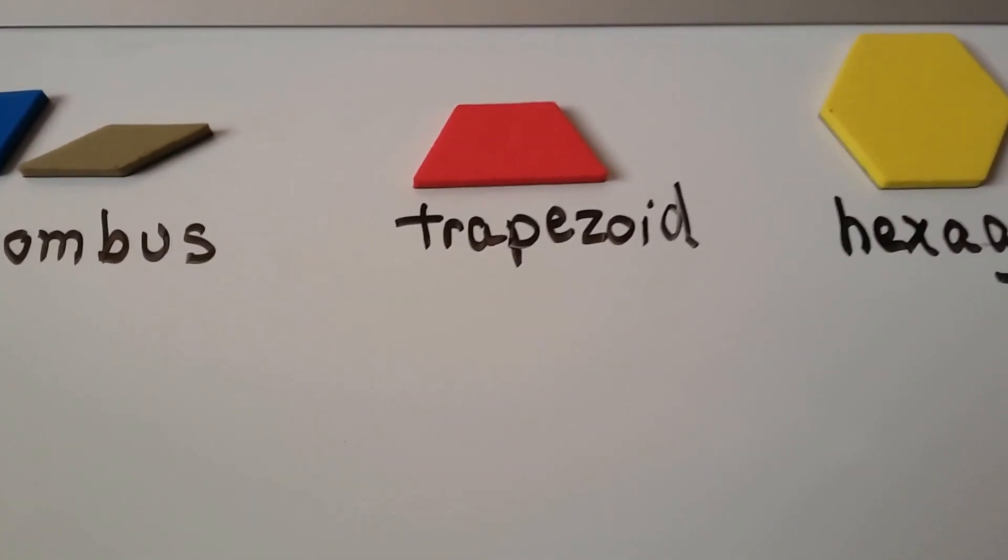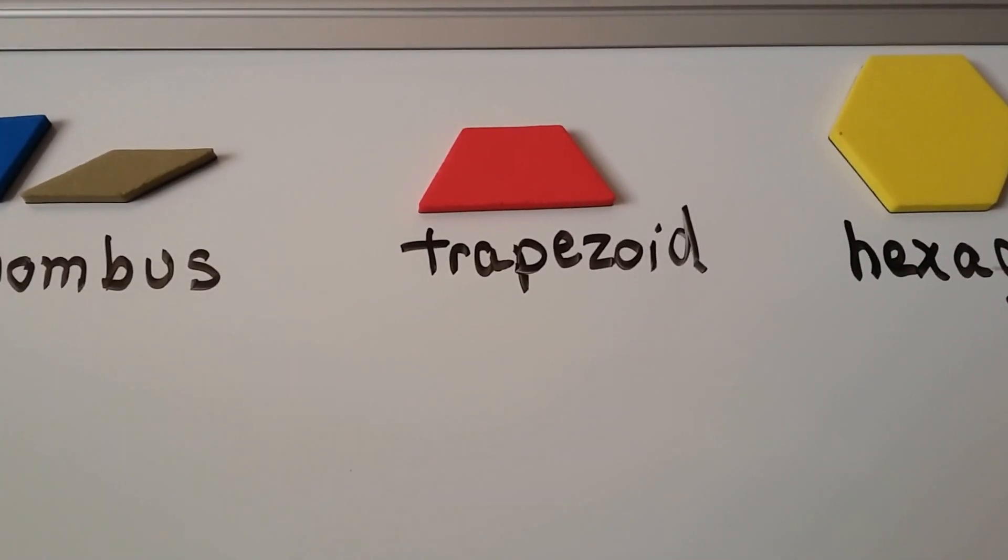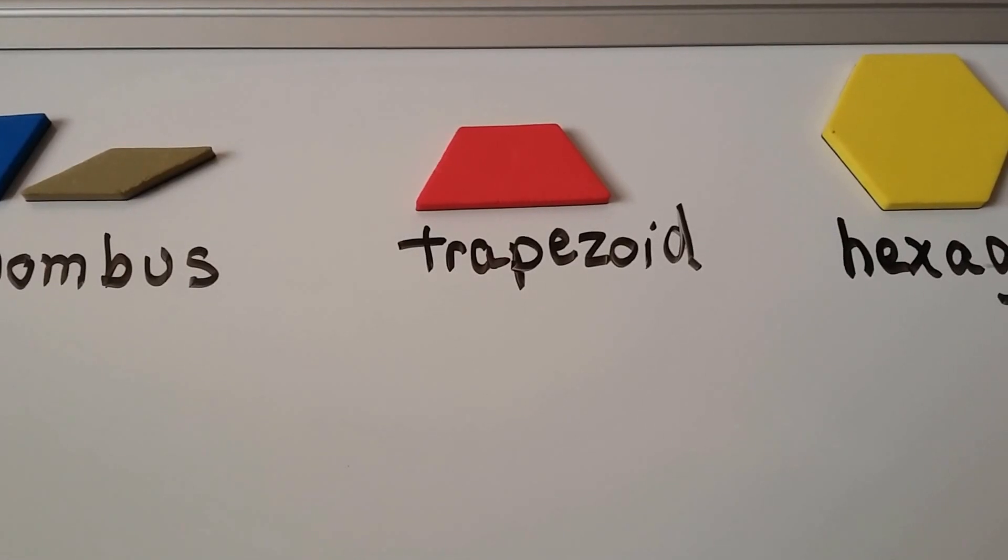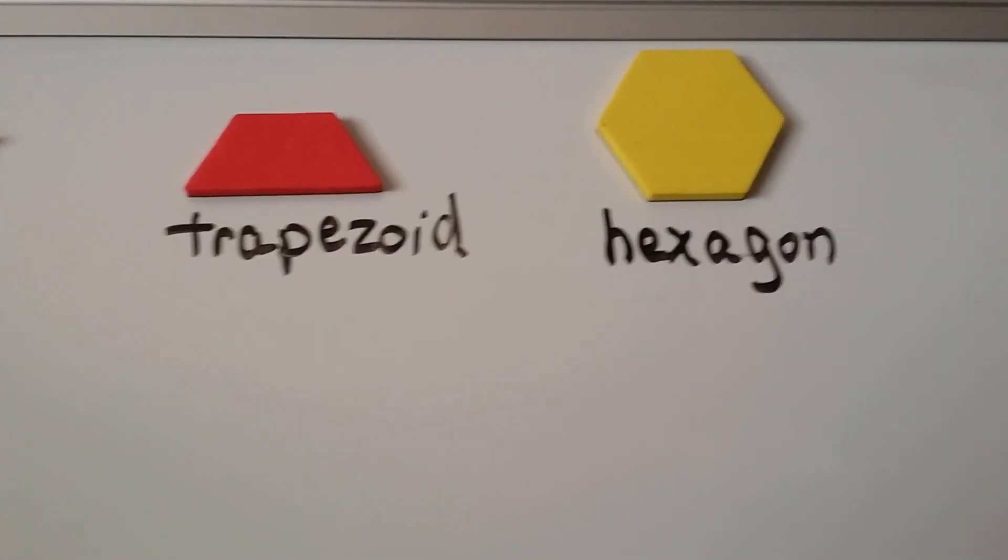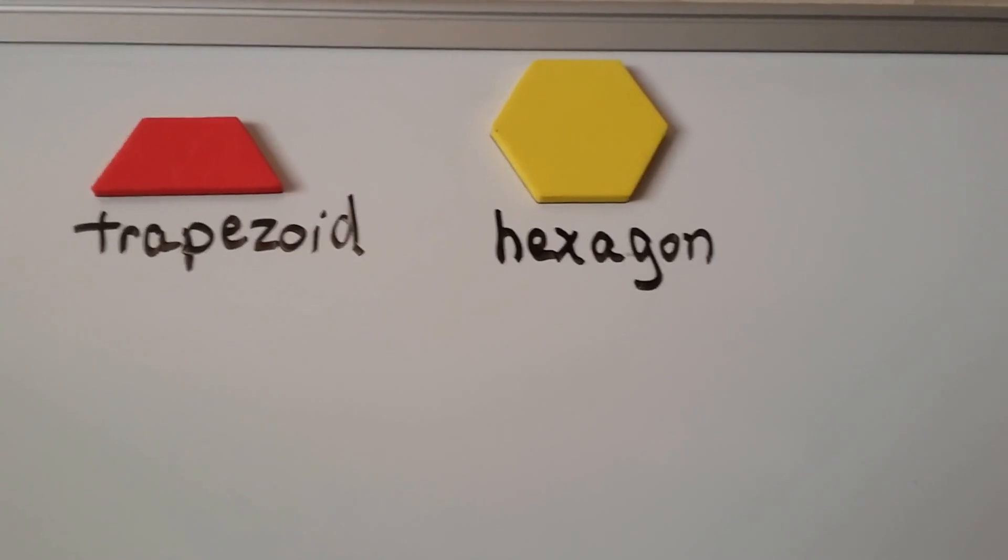And a trapezoid, it has a top part that's smaller than the bottom part and then the two sides are slanted. And then a hexagon has six sides.